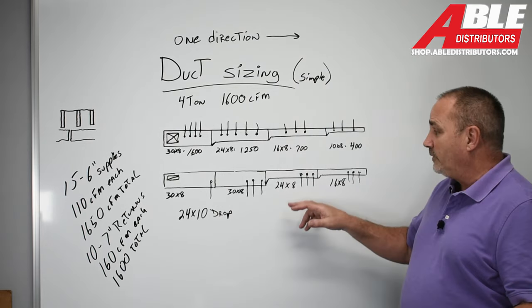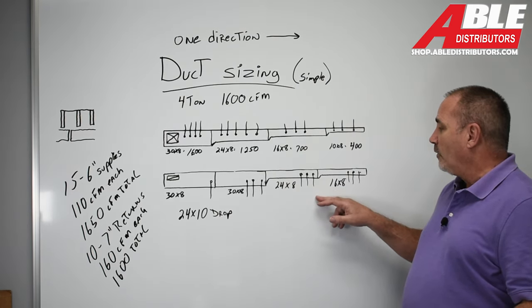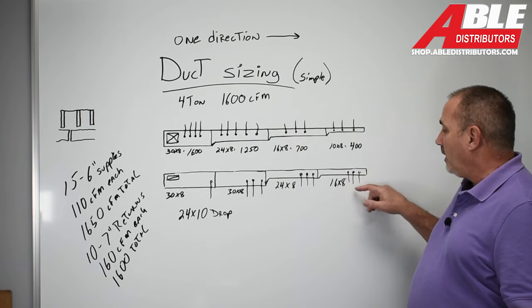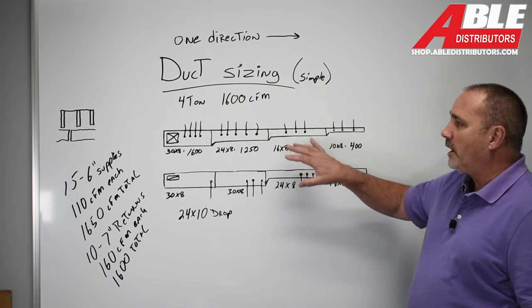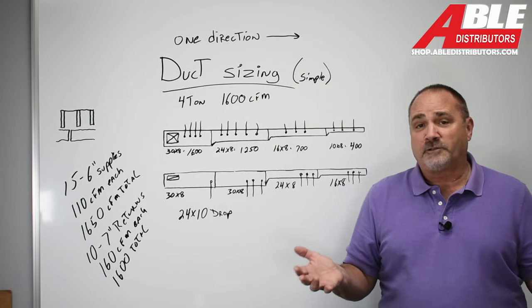So then as soon as the second piece, we took three more off. Then it allowed me to reduce down to 24 by 8. I took three more returns, reduce down to 16 by 8, three more returns.